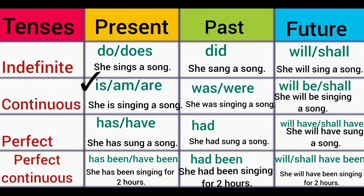Helping verbs for present continuous tense are is, am and are. Is is used with singulars, am is restricted for I, and are is used with plurals. The sentence structure is: she is singing a song. So the verb ing form is used here.